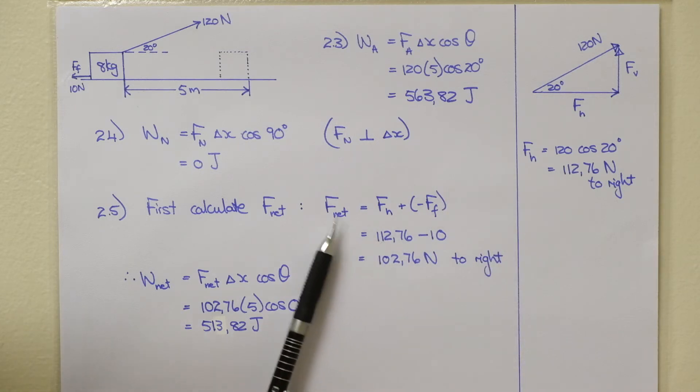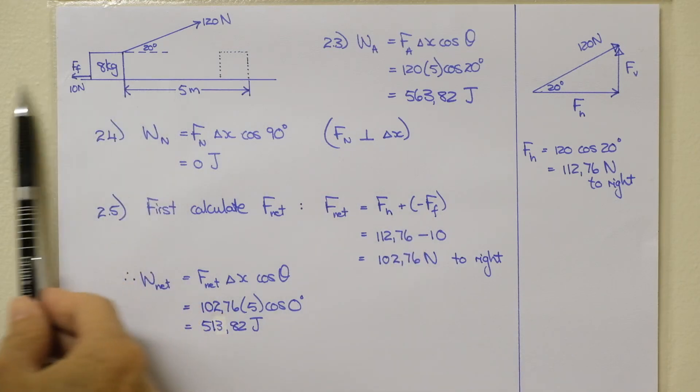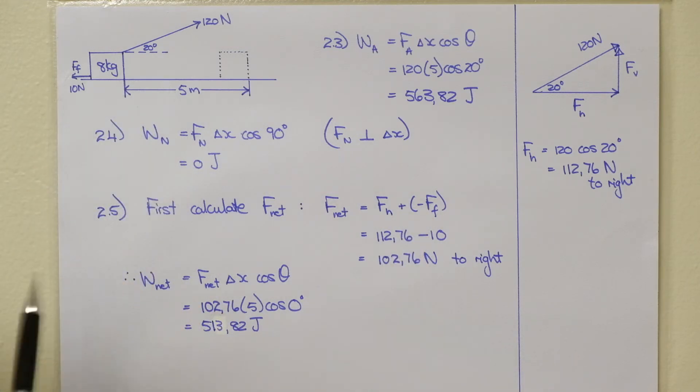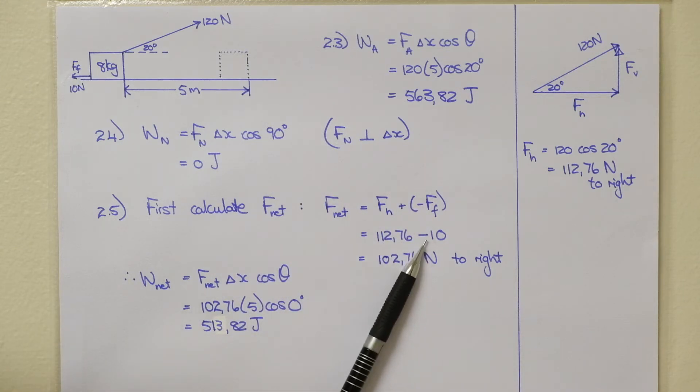Substitute it in here. F net is F H plus your frictional force. But frictional force is in the opposite direction. I've taken to the right as positive and to the left as negative. So F H is to the right. Your 10 newtons for frictional force is to the left. So there's your answer for F net. This is 102.76 newtons to the right.